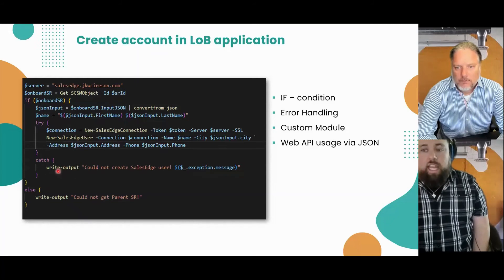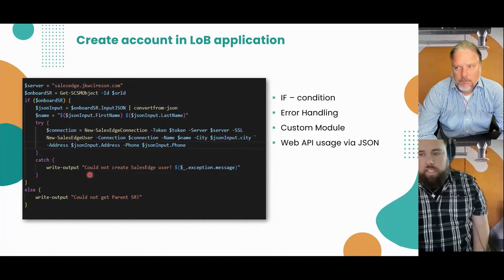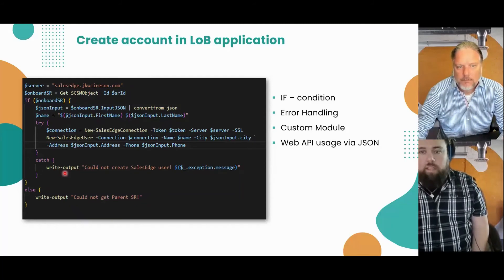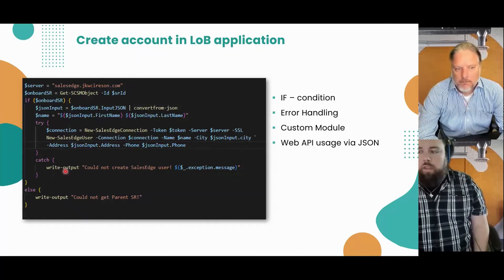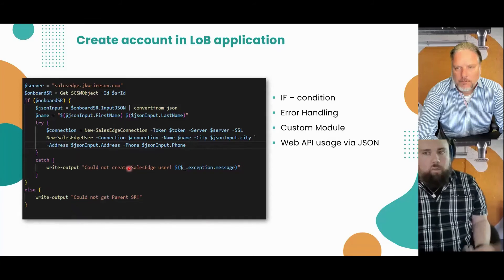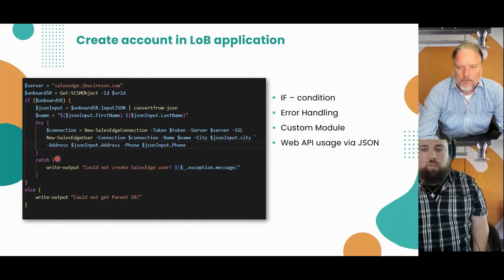The catch block is not going to throw an error unless we throw one manually — but it's going to prevent the script from bombing out and failing completely, allowing us to try to remediate if we want to. In my example, I'm doing a write-output, which will ultimately end up in the PowerShell activity's output tab. I'm wrapping the exception that gets thrown when one of these fails, so that'll also be caught in my write-output. But it's not going to cause the script, service request, or PowerShell activity to fail. Try-catch is really useful for error handling, remediation, and logging if necessary.